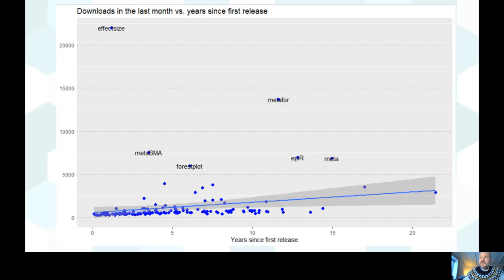'Effectsize' is a package that probably has the widest range of effect size calculations I've seen, both Bayesian and frequentist. 'Meta' remains quite an important one — it allows the data format from RevMan, so it's obviously quite important for systematic reviewers. 'Meta-bma' is another relatively new one but also highly downloaded.